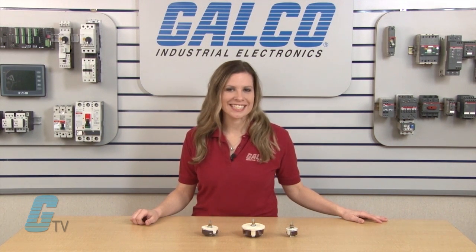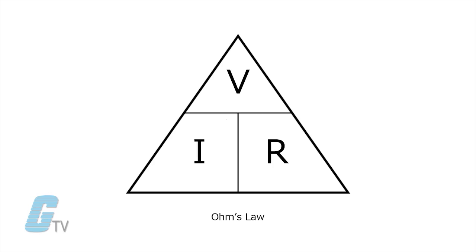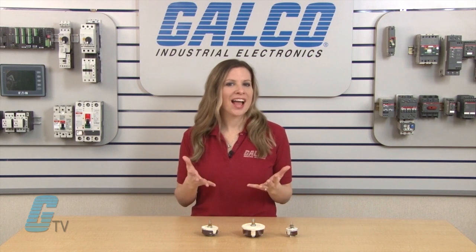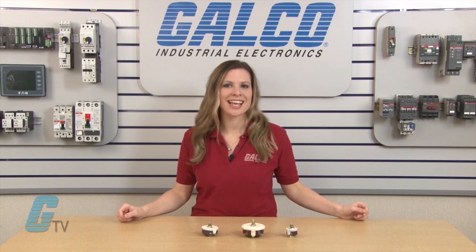Rheostats use resistive materials to control the amount of resistance in a circuit. With Ohm's law, the current diminishes as the resistance escalates, or current increases as the resistance decreases. Current enters the rheostat by means of one of its terminals, then flows through the wire coil and contact, and exits through the other terminal. Rheostats do not have polarity and behave the same when the terminals are reversed.